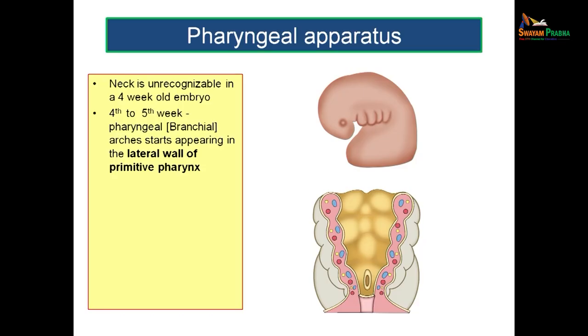The neck of the embryo is unrecognizable in a four-week-old embryo. You won't be able to visualize the neck if you take a four-week-old embryo. From the fourth to fifth week, that is the time when you get the development of pharyngeal arches or branchial arches. They start appearing in the lateral part of the primitive pharynx. This is the cephalic end, in which region you will get the primitive gut tube developing — this can be considered as the pharyngeal portion.